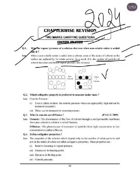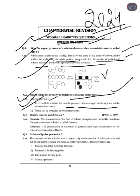Second question: Which colligative property is preferred to determine molar mass? Osmotic pressure is preferred. First, even in very dilute solutions, the osmotic pressure values are appreciably high and can be measured accurately. Second, these measurements can be made at room temperature.